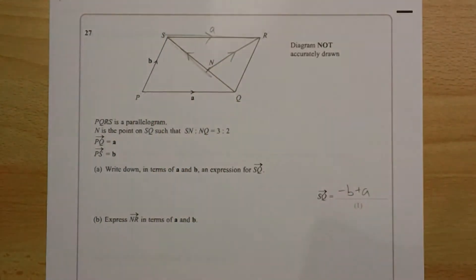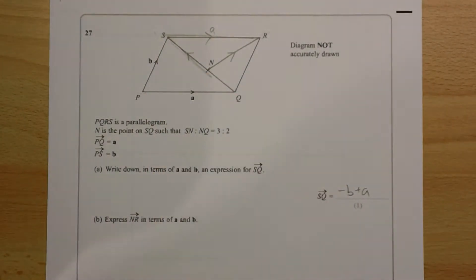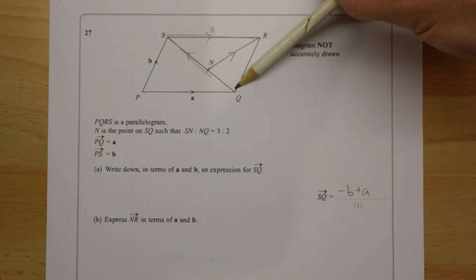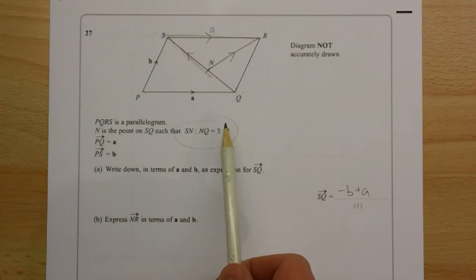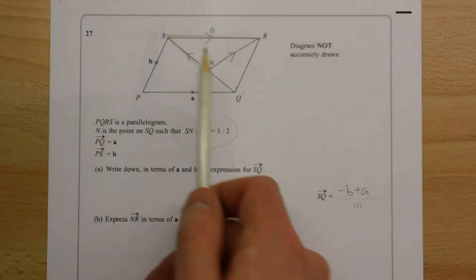This one is a little bit more complicated, from N to S, but we can do it. We know S to Q is minus B plus A, and because we're told the ratio of these points, we can work out this vector here.